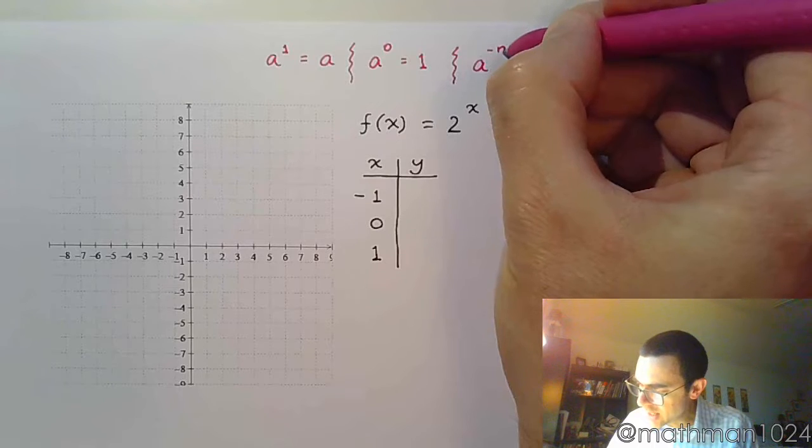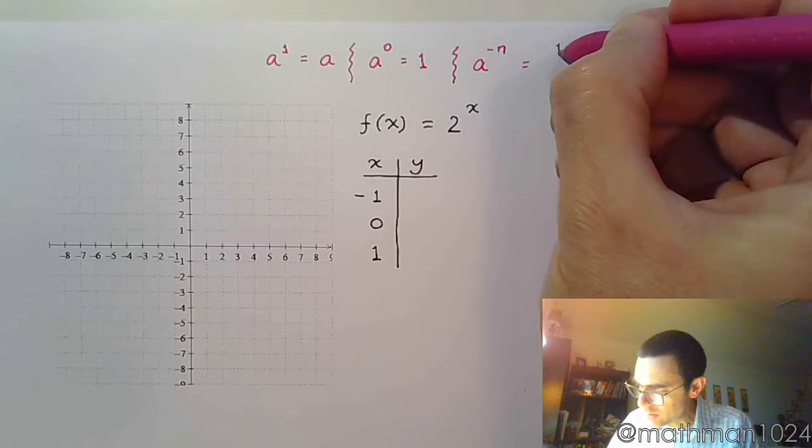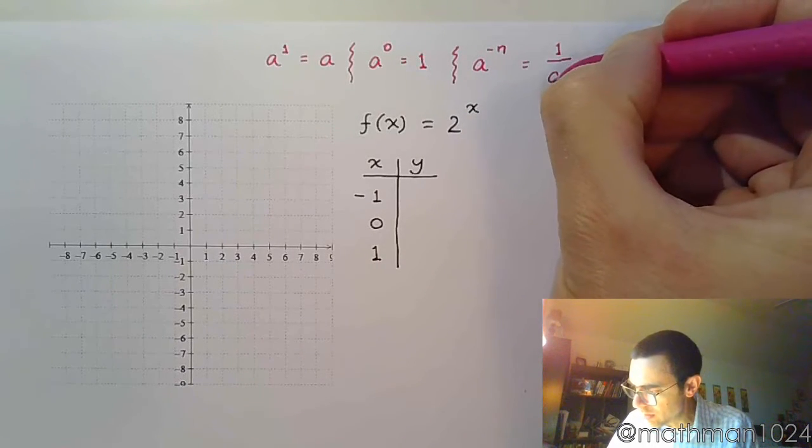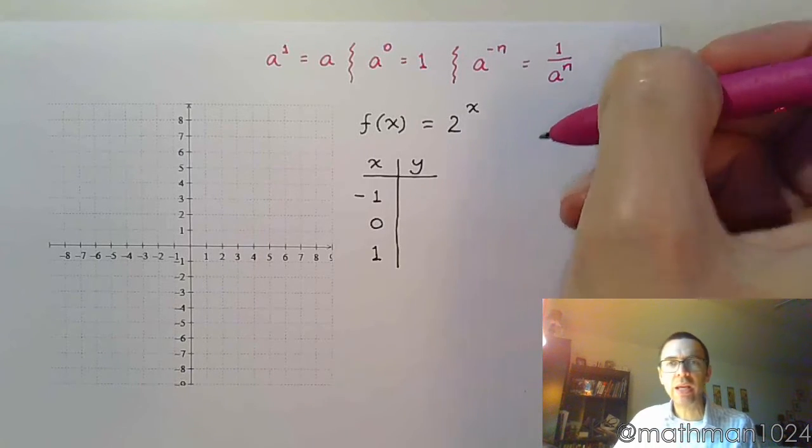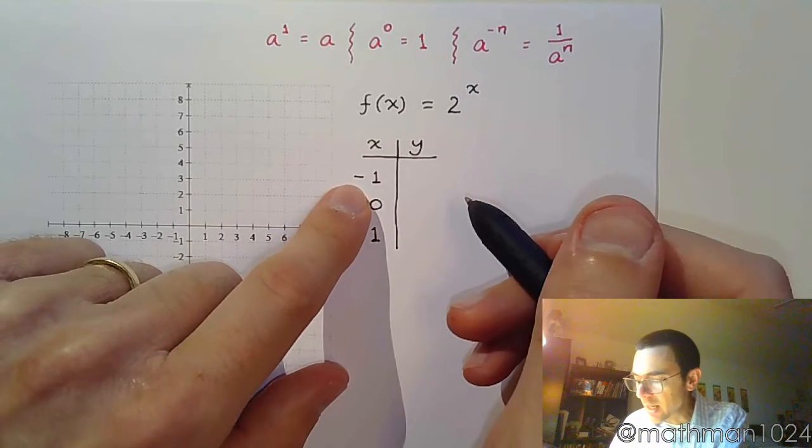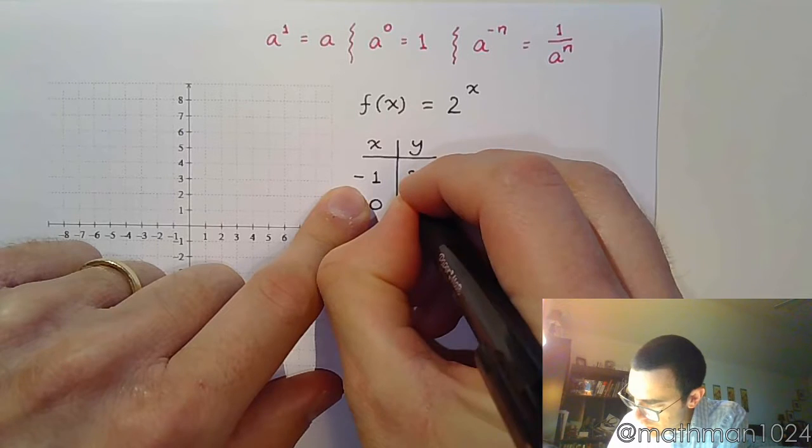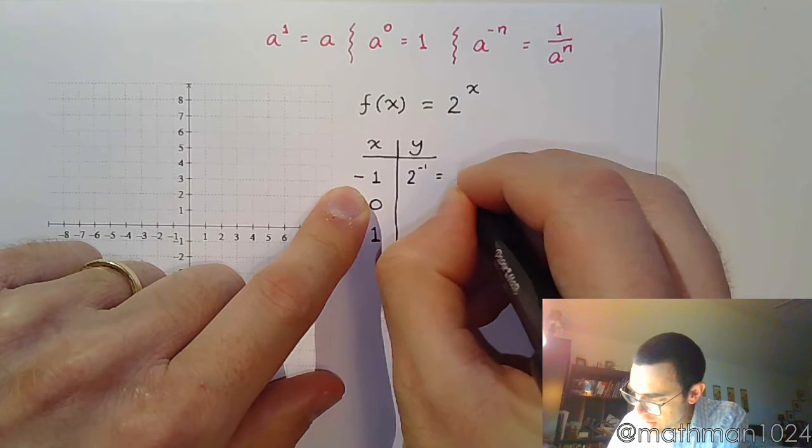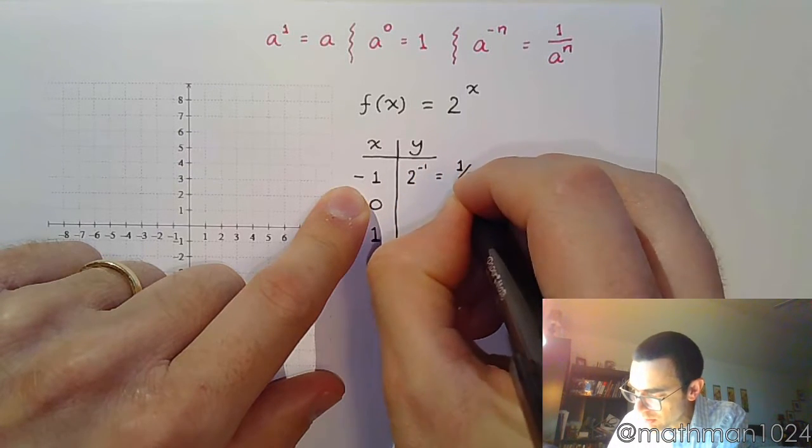And when you have a negative power, that means 1 over a to that power. Remember, a negative power just means you do the reciprocal. So we keep that in mind. Plugging in -1 means 2 to the negative first, but that means do the reciprocal and you get 1/2.